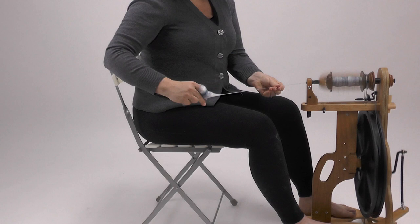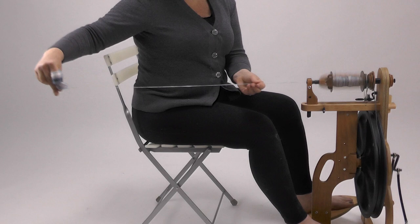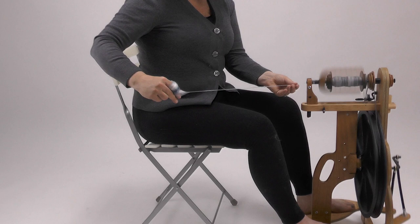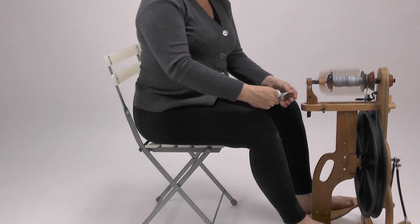Draft back with your fiber hand while your forward hand controls the twist. Your fiber hand starts out just a little distance away from your forward hand. Pay close attention to how the twist feels in your fiber hand.